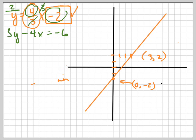So notice the green equation isn't in slope-intercept form. It's in standard form, and the easiest way to graph a standard form equation, in my humble opinion, is to find the x-intercept and the y-intercept.